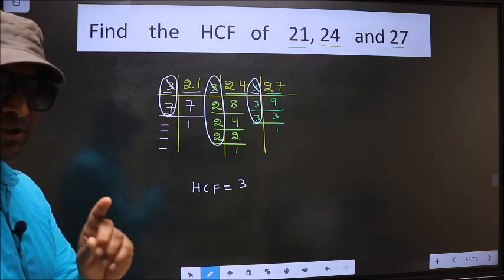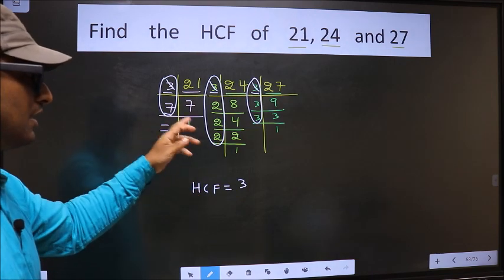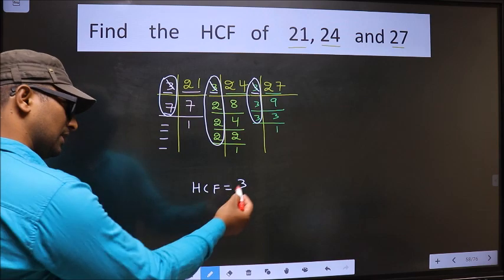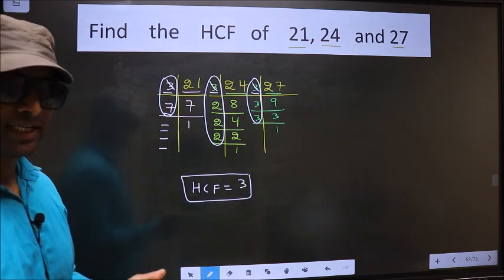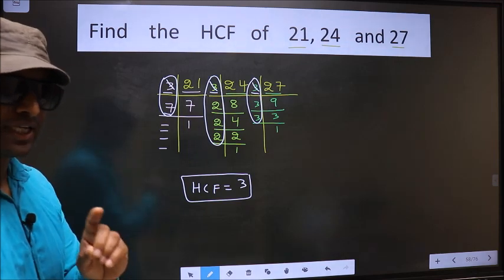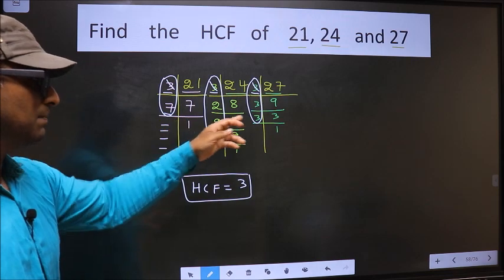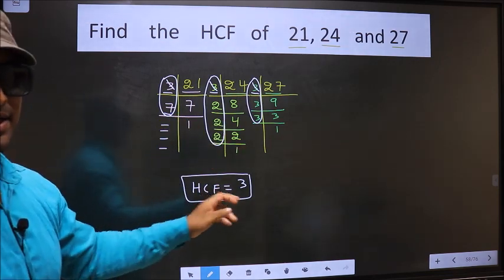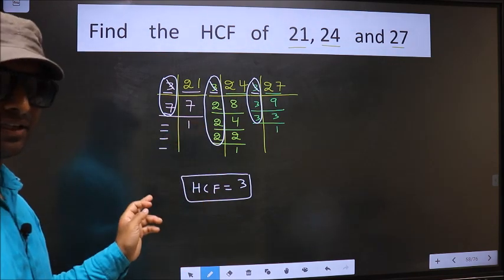Therefore we have only one number 3 present in all the 3 places. So 3 itself is our HCF. Am I clear?